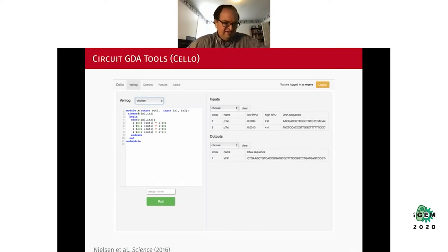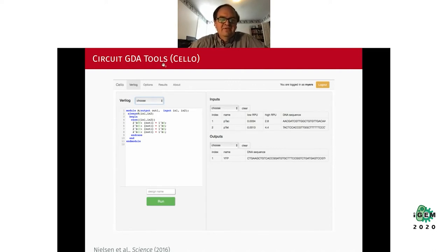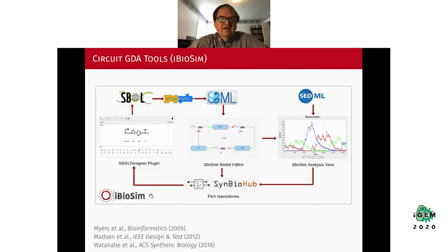The last category of tools I wanted to talk about are the circuit genetic design automation tools. One of the more famous examples is the Cello tool, developed out of MIT and Boston University. For those of you who might be electrical engineers, you'll recognize that this language is describing a circuit using the Verilog language used by digital electronic designers. You describe the circuit, press the run button, and it mines information about your genetic design parts to put them together to build your genetic circuit.